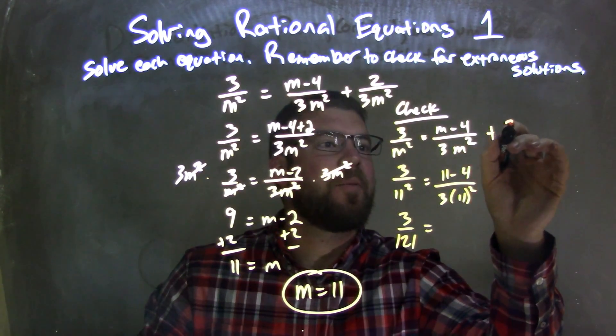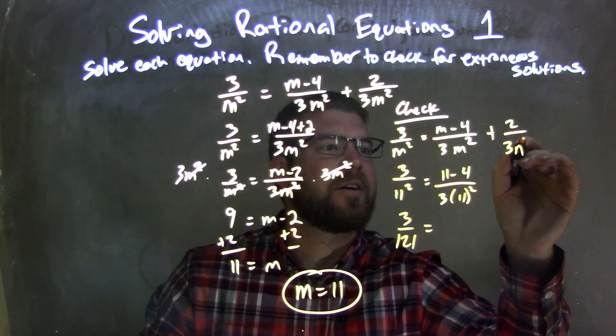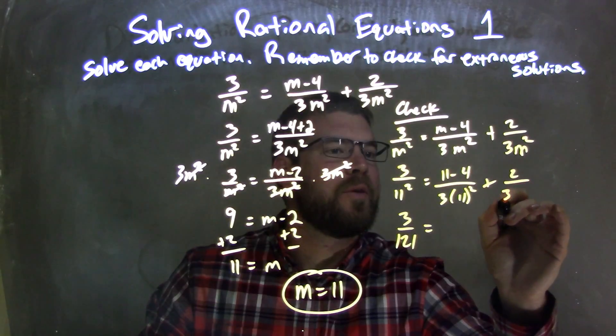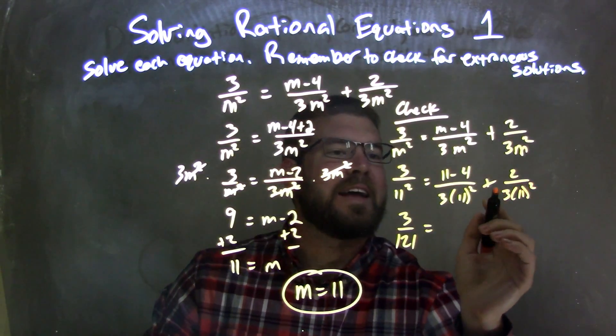Oh, we forgot the other parts here. No wonder I'm like, this isn't going to work. 3m squared here, and then we have plus 2 over 3 times 11 squared. Fantastic.